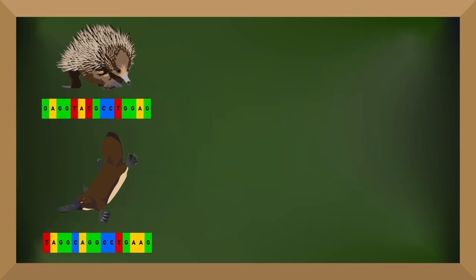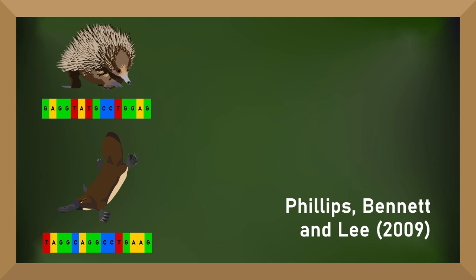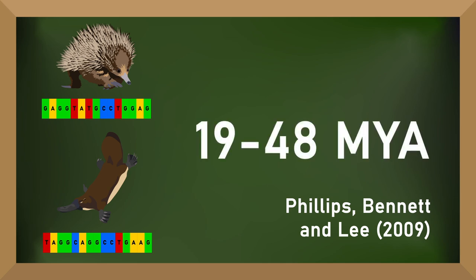The analysis by Phillips, Bennett and Lee suggests that instead of a divergence in deep time, the two separated between 19 and 48 million years ago.